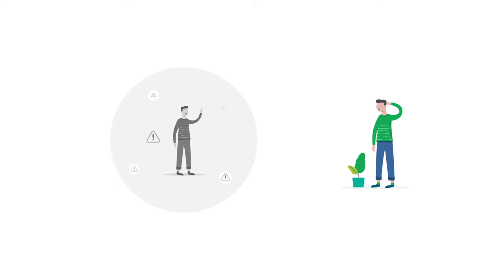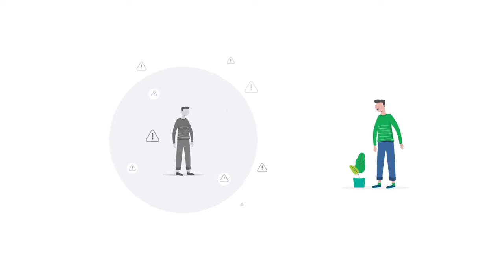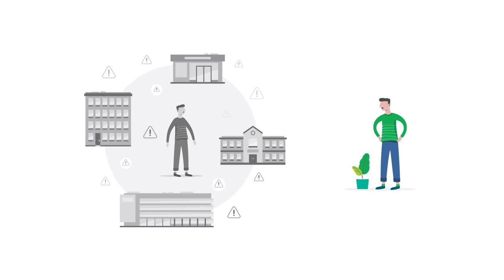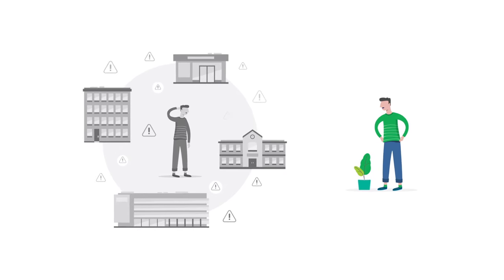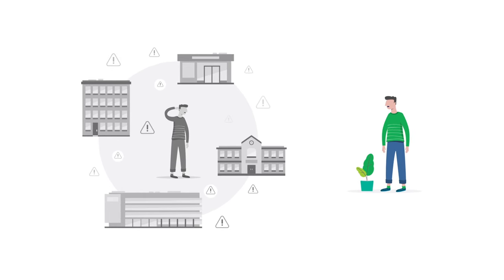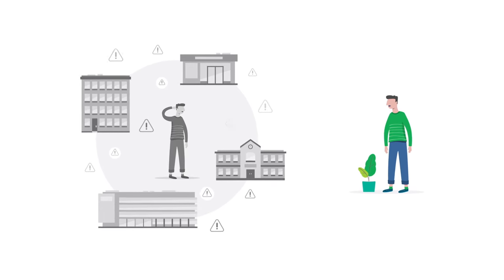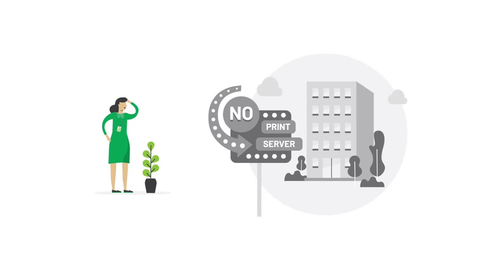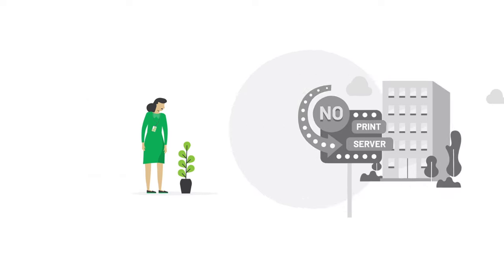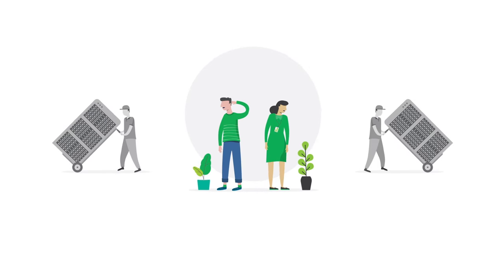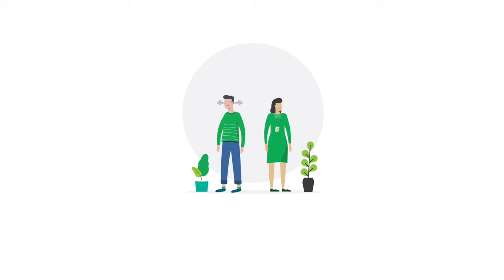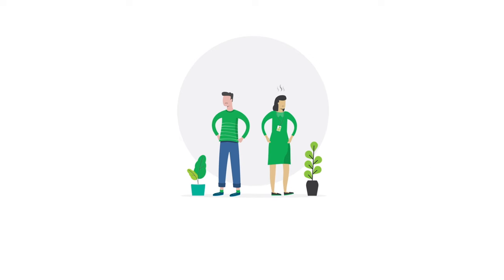Wait, wait, wait — I've got one. Users wanting to print in multiple branches, offices, or campuses, and you know they're using different brands of printers and copiers in each location. Who cares about compatibility? What about when there's no print server in a location? Or computers aren't on a local domain? Or you found a way to deploy print queues, but it's ugly.